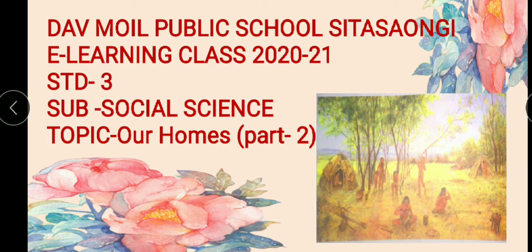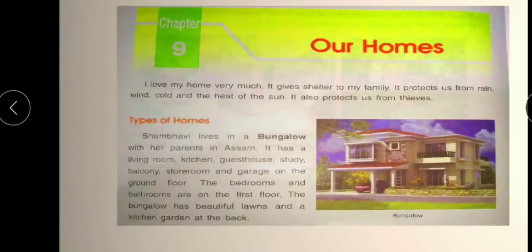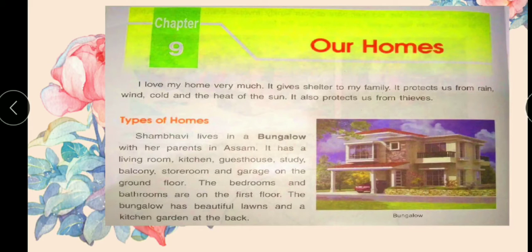Children, we have started this chapter with Shambhivi. Shambhivi lives in a bungalow with her parents in Assam, and her cousin Mala lives in Mumbai in an apartment which is in a multi-story building. The flat has only two small rooms, and the tiny balcony is used as a study. The kitchen is so small that only one person can work there. So children, you have seen a bungalow is a big house and an apartment is a multi-story building with small rooms.